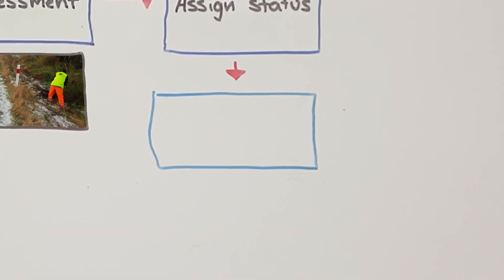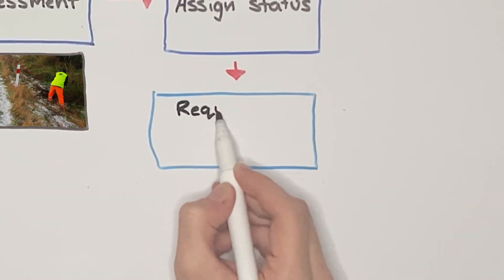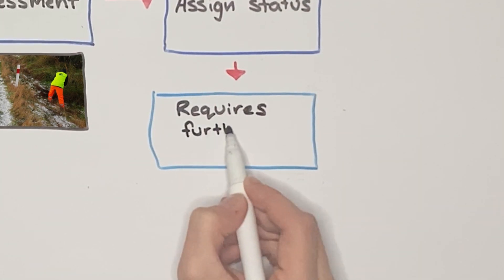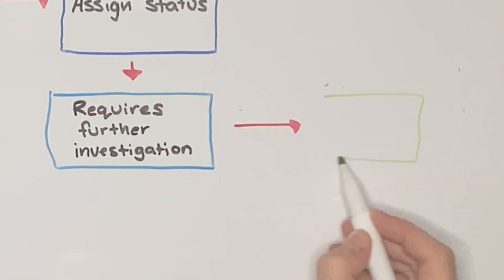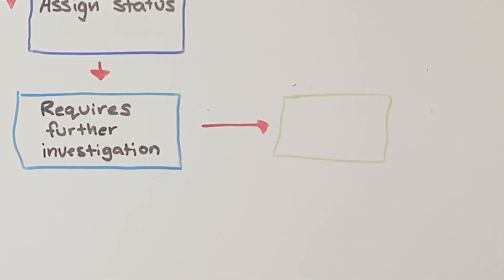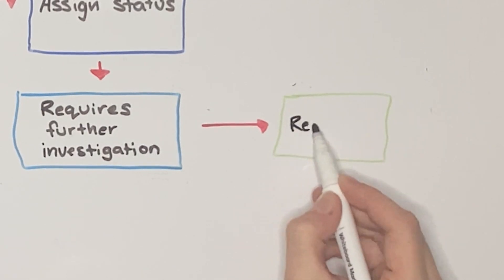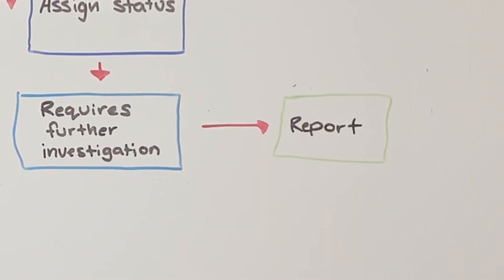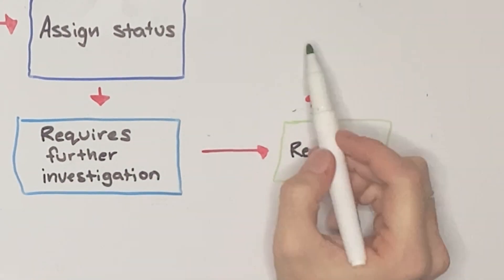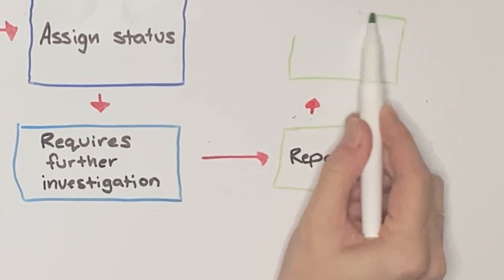Statuses include: requires further investigation. This status is used, for example, if access is difficult and not enough information has been collected, so the site might need to be revisited.